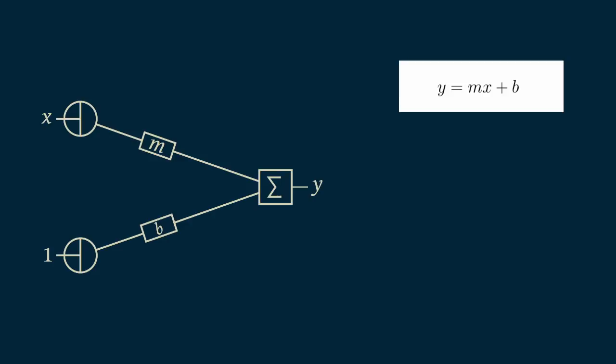On the far left, the circular symbols just indicate that the value is passed through. The rectangles labeled m and b indicate that whatever goes in on the left comes out multiplied by m or b on the right. And the box with the capital sigma indicates that whatever goes in on the left gets added together and spit out on the right.